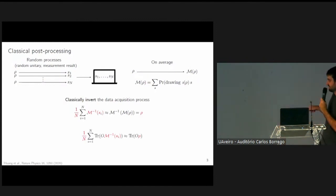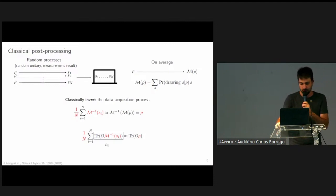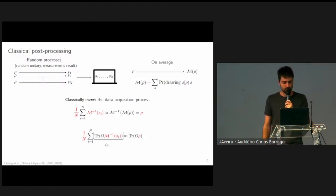From this, it's easy to see that given an observable, we can construct a random variable which I would call O hat that averages to the correct expectation value. So from the classical data, we can now estimate expectation value of observables.